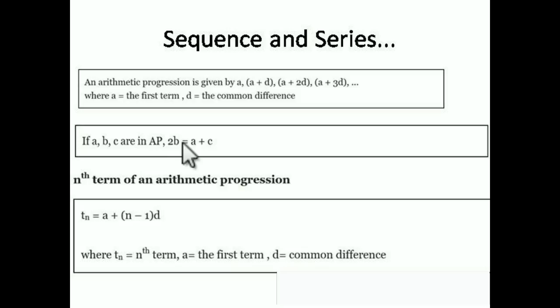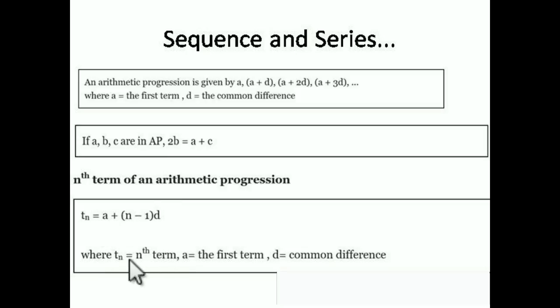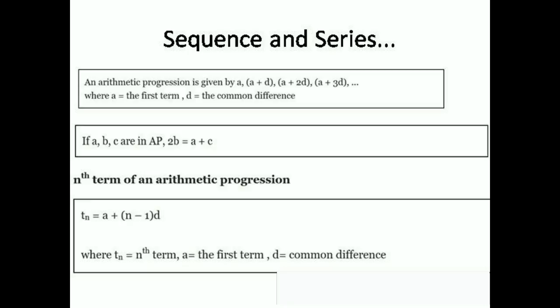The nth term of an Arithmetic Progression is given by the formula: Tₙ = a + (n−1)d, where Tₙ is the nth term, a is the first term, and d is the common difference. This is not very tough; we just have to know the formula.